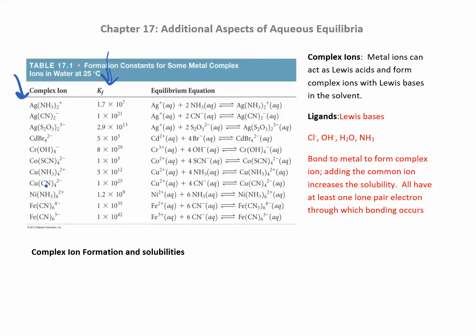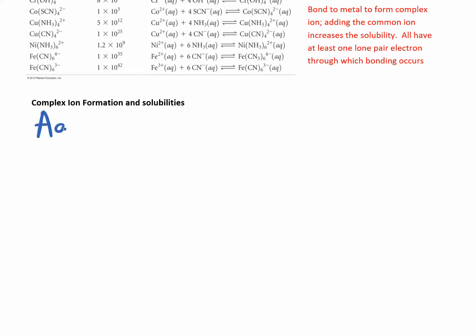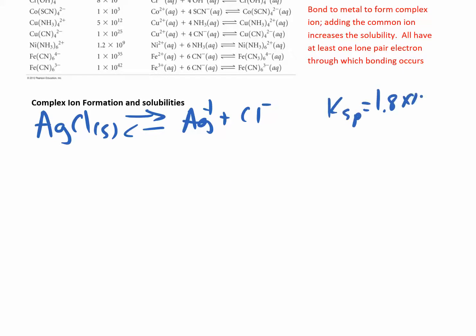If you have free silver ions in solution and add something that can pull them out, it drives the reaction forward. This is another way to increase the solubility of slightly soluble salts. For example, silver chloride dissociates into Ag+ and Cl⁻ with a Ksp of 1.8 × 10⁻¹⁰ — pretty small, not very soluble.